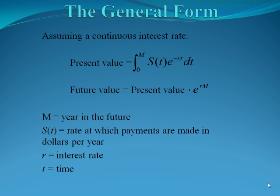Assuming a continuous interest rate, our new equation becomes that present value will be the integral from 0 to m, where m is the number of years in the future that we are investing our money for, S of t, the rate at which payments are made in dollars per year, e to the negative rt, where r is our interest rate and t is time. Our future value can be found by doing present value times e to the rm, where again r is our interest rate and m is the number of years we are going to be investing for.